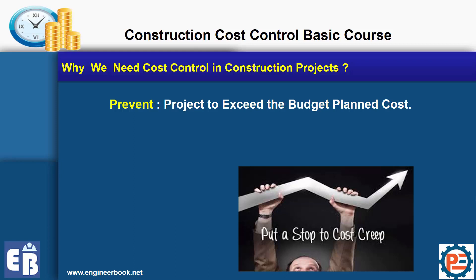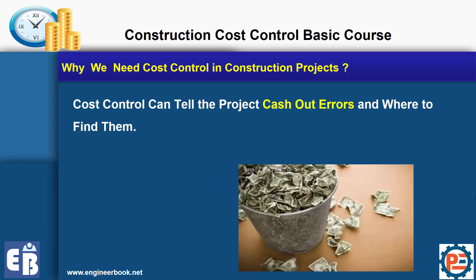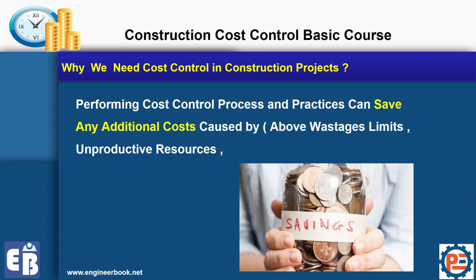So cost control is mainly a prevention action — it prevents the project from exceeding the budgeted cost. But it can also find where the errors are. Cost control can tell you the project cash-out errors and where to find them. Performing cost control can save additional costs caused by wastage, unproductive resources, or any other kind of unwanted activities.